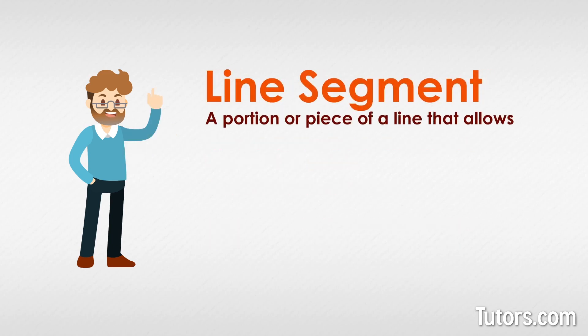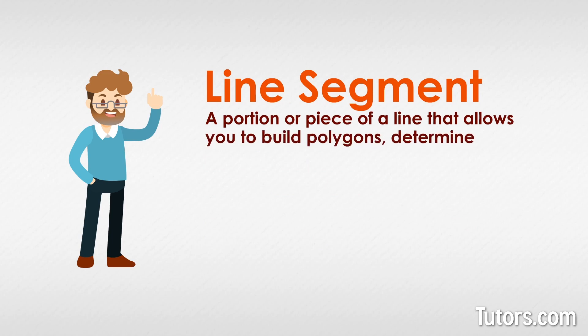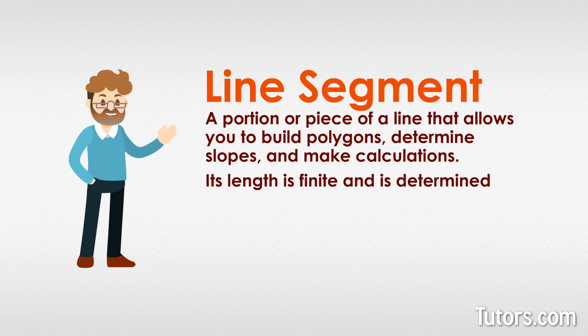A line segment is a portion or piece of a line that allows you to build polygons, determine slopes, and make calculations. Its length is finite and is determined by its two endpoints. The shorthand for a line segment is to write its two endpoints and draw a dash above them like this.